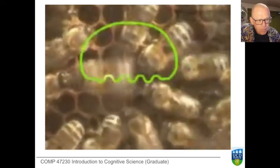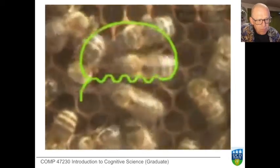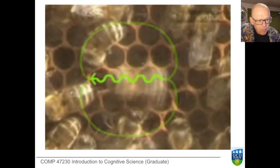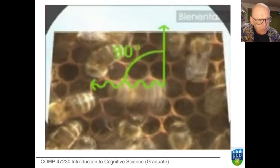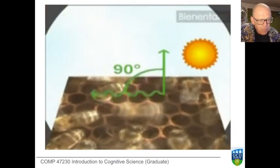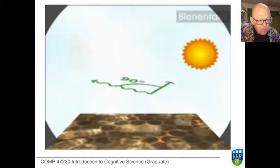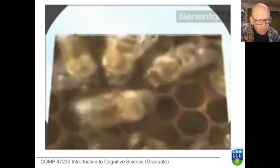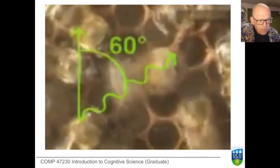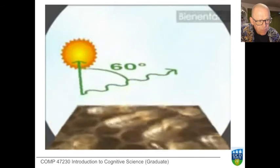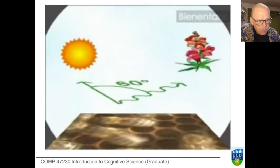The secret lies in the direction of the straight run, or to be more precise, in the angle between the straight run and the perpendicular — which in this case is 90 degrees to the left. This tells the other bees that food is available 90 degrees to the left of the sun. If the angle is 60 degrees to the right, they'll be flying 60 degrees to the right of the sun.